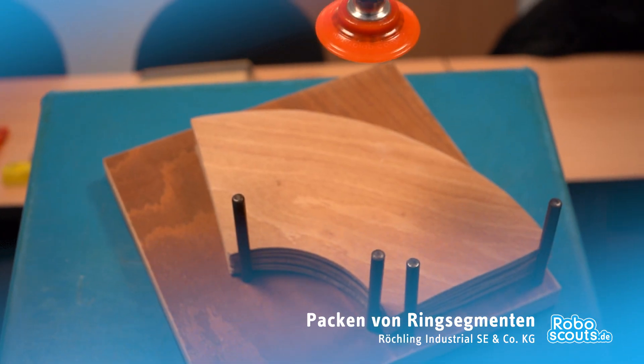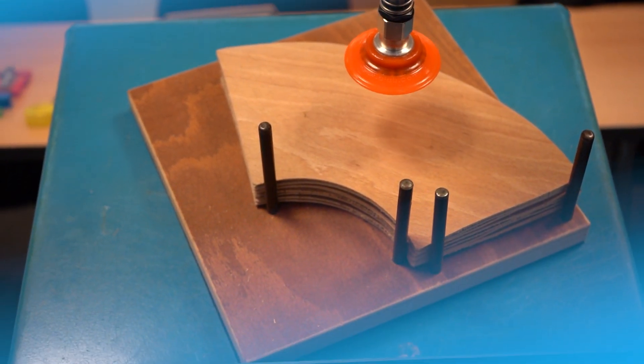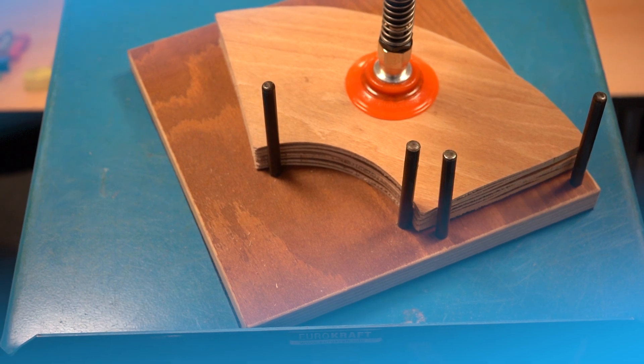Dabei war ein bisschen das Problem einmal die Saugergeometrie und einmal auch, dass der Roboter für die Umdrehungen immer den Tisch weiterdrehen muss. Das zu programmieren war nicht so einfach, aber wir haben es geschafft.